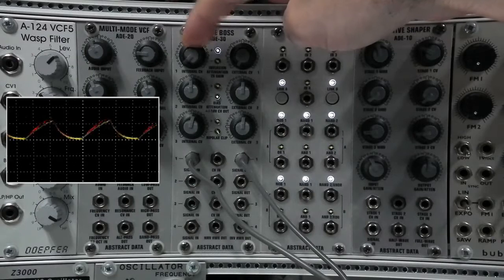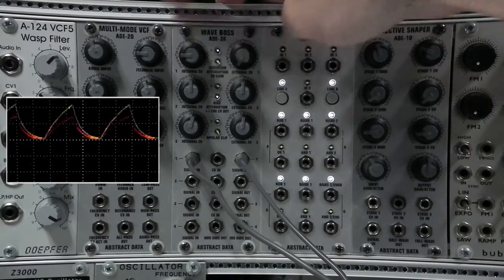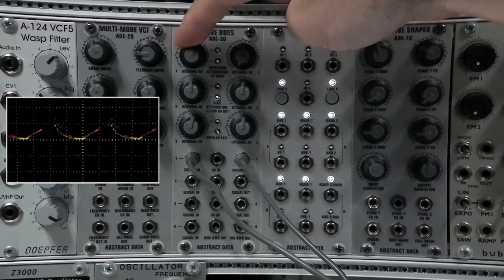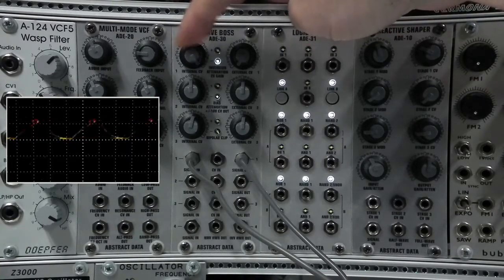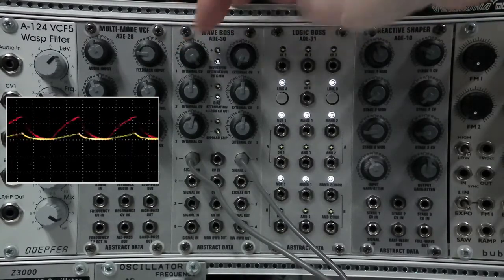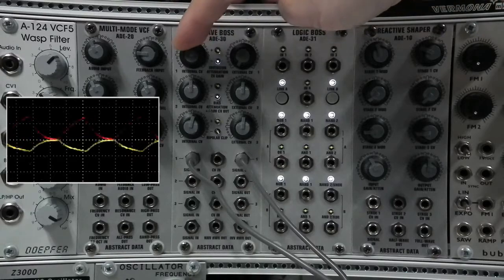ADE30 can also be used with CV signals. Here we've got an ADSR. You can see that I can give it some gain in the non-inverted form. I can take it down, I can attenuate it, I can invert it. You'll see the LEDs lighting up there and I can also give it some gain.